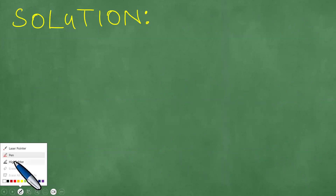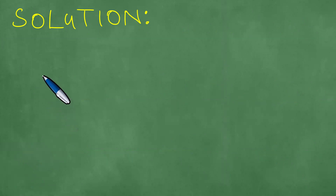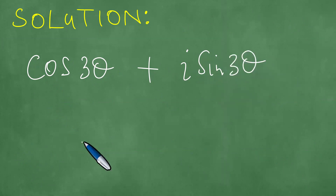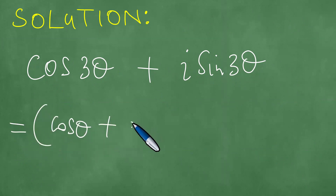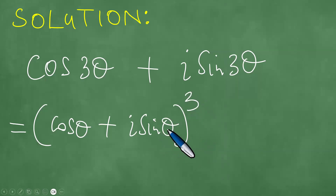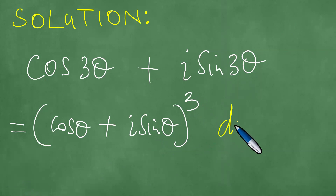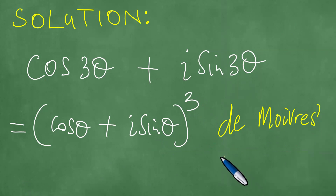To present the actual solution to these, we need to take note of the fact that cosine 3 theta plus i sine 3 theta is actually equal to cosine theta plus i sine theta, all cubed. This here is what we call De Moivre's theorem.